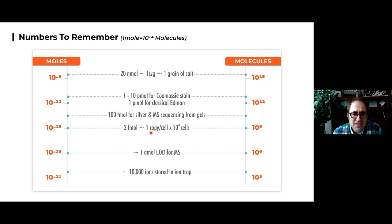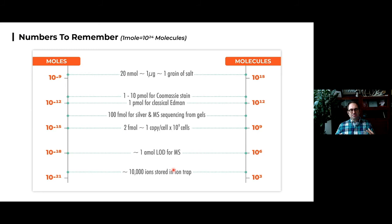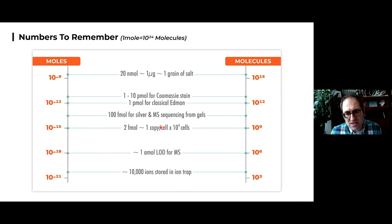Imagine a protein that's only created at one copy per cell. If you had a billion cells, you'd still only have a billion copies — just a couple of femtomoles from 10 to the 9 cells — well below the ability to see it by traditional methods. Mass spectrometers can detect things at very low levels, at least an attomole of material. In our ion traps we typically store about 10,000 ions, a very small amount of material, but it can be exquisitely sensitive for studying proteins in biological systems.